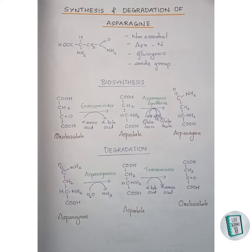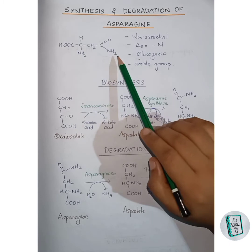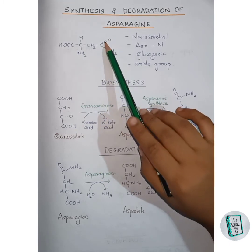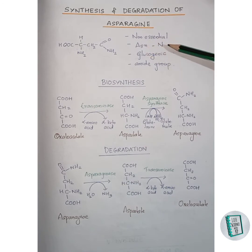Welcome back to the channel. Today we will be discussing the synthesis and degradation of asparagine. Asparagine is a non-essential glucogenic amino acid. This is the structure of asparagine — it has an amide group in its structure. The three-letter representation of asparagine is Asn and the single-letter representation is capital N.